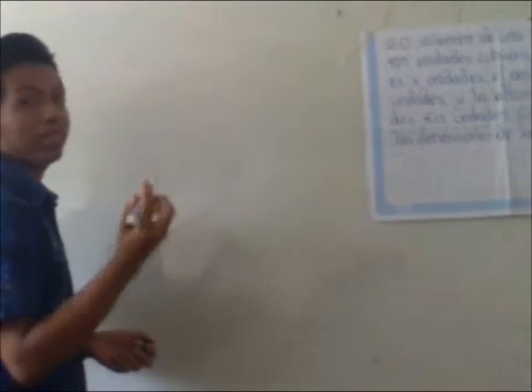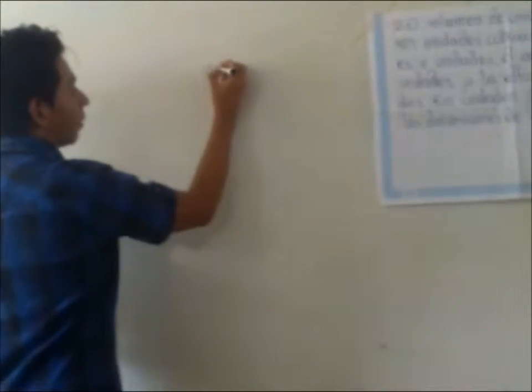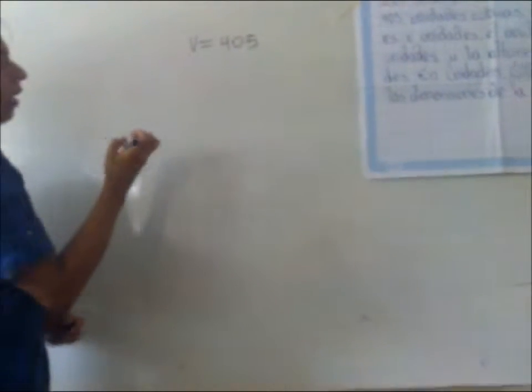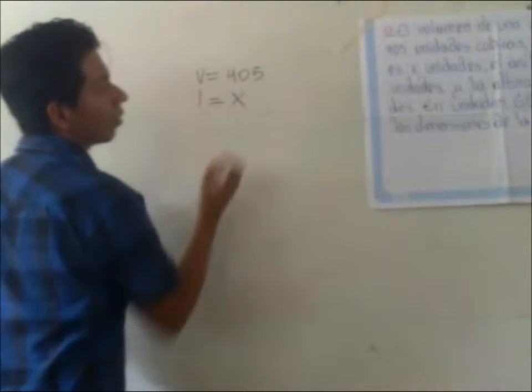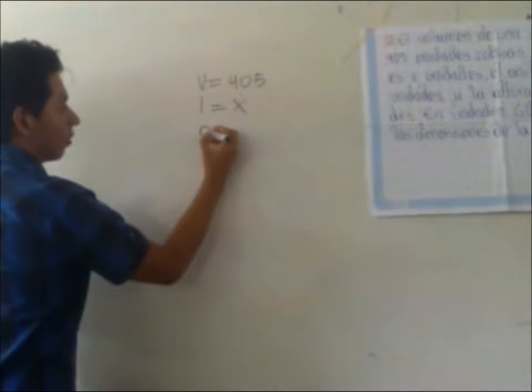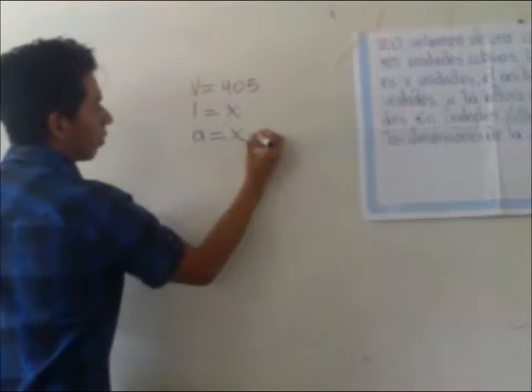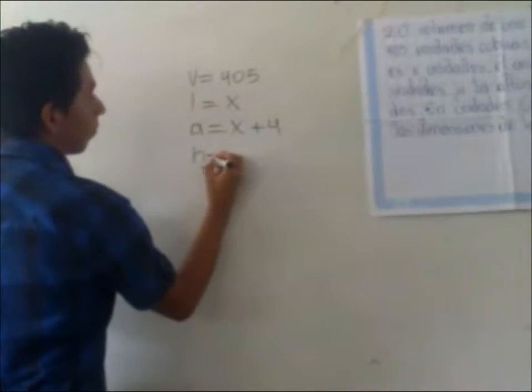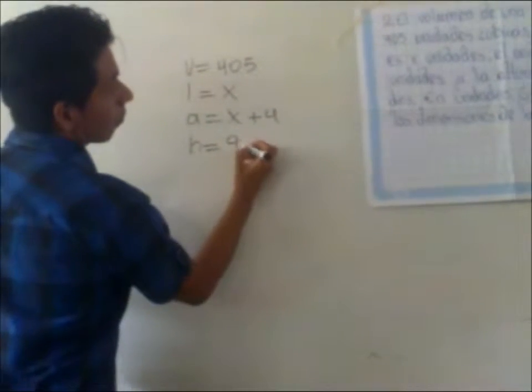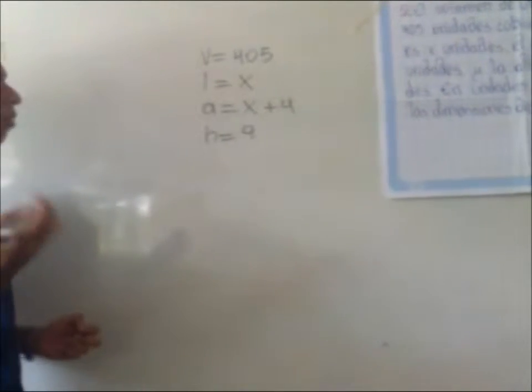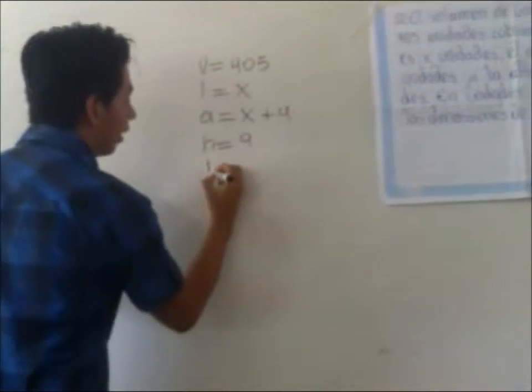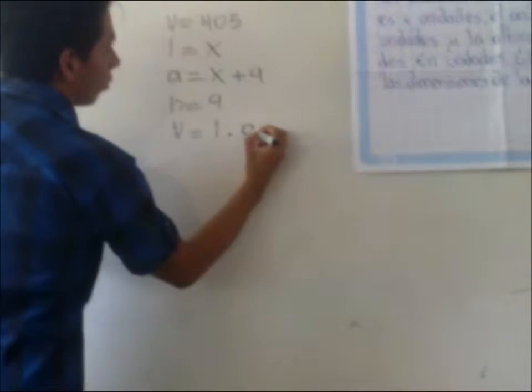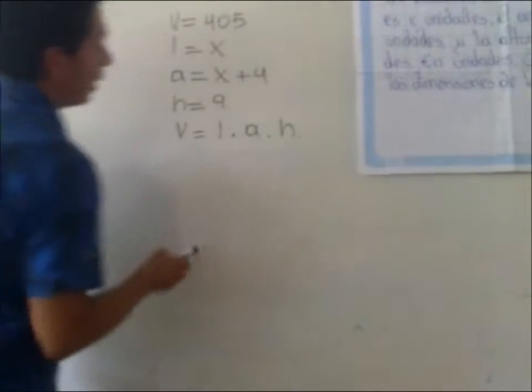The problem consists of finding the volume of a rectangular prism of 405 cubic units. The length is equal to x units, the width is x plus 4, and the height is 9 units.